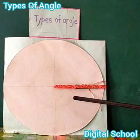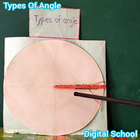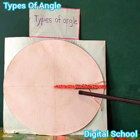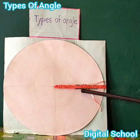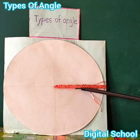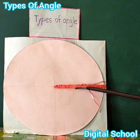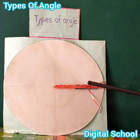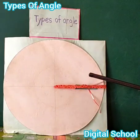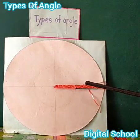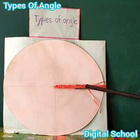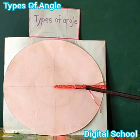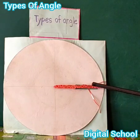Assalamu alaikum, I am Asuna. Today we will learn about types of angle. Dear friends, look at the board. This is the zero angle. The definition of zero angle: the position angle between the stick is called a zero angle. The figure shows a zero angle.